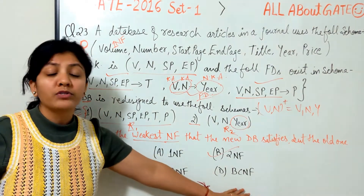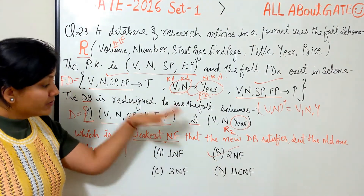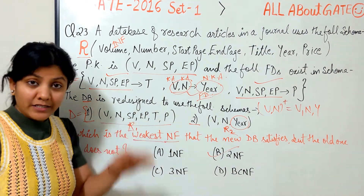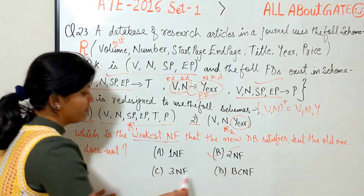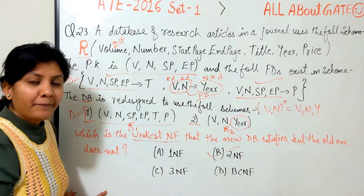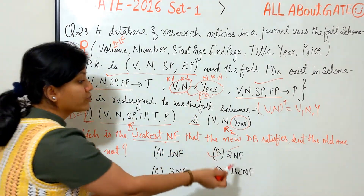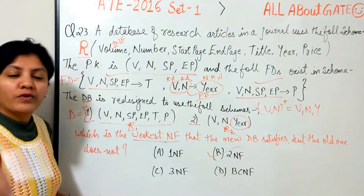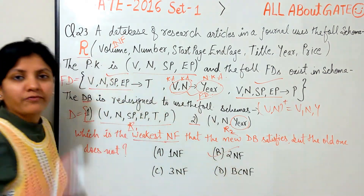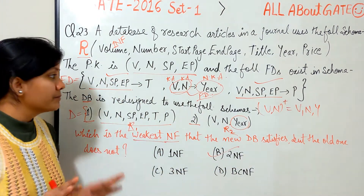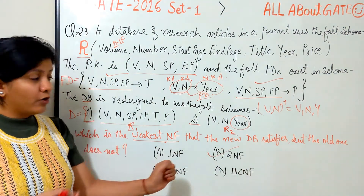The only slight confusion might be: why are we not choosing BCNF? Because the question asks for the weakest normal form that the new database satisfies but the older one was not satisfying. The older one was not satisfying 2NF, 3NF, or BCNF. The newer one satisfies all three — 2NF, 3NF, and BCNF — but among the three, the weakest or lowest is 2NF. That is what makes the answer straightforward.